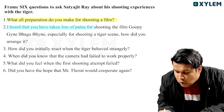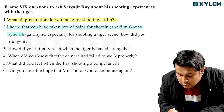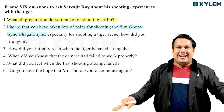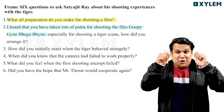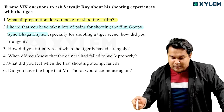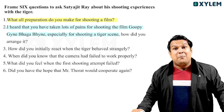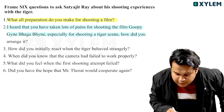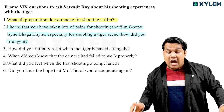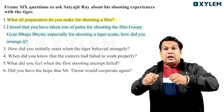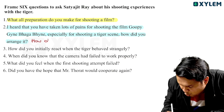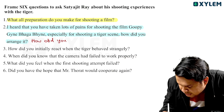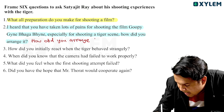I heard that you have taken a lot of pains for shooting the film Goopy Gaine and Bagha Baine, especially for shooting the tiger scene. How did you arrange the tiger for the film Goopy Gaine and Bagha Baine?